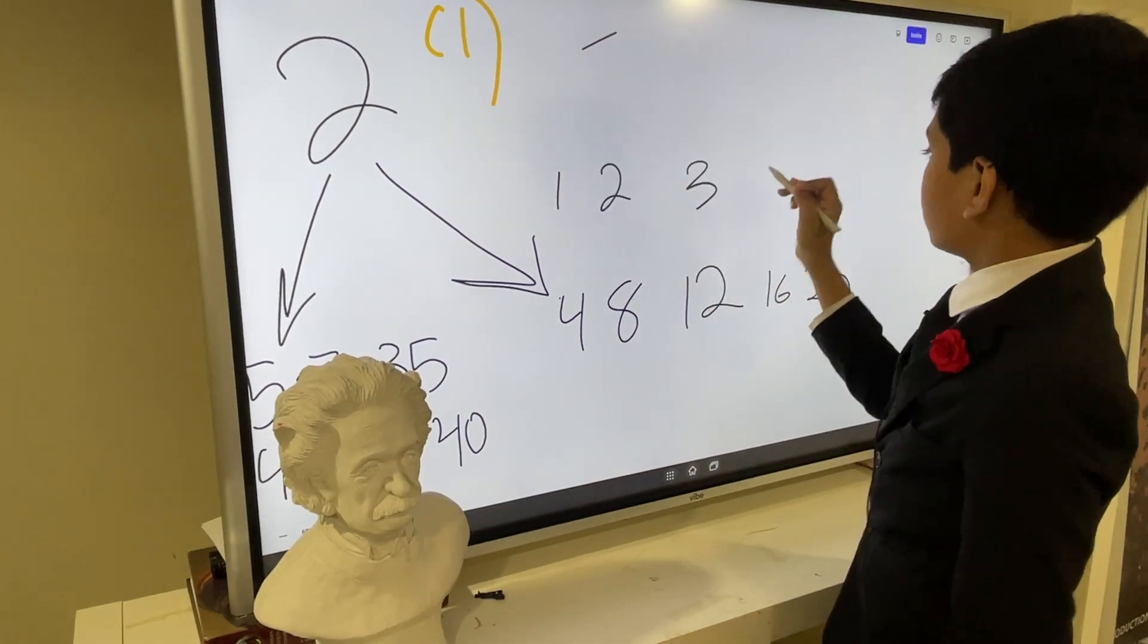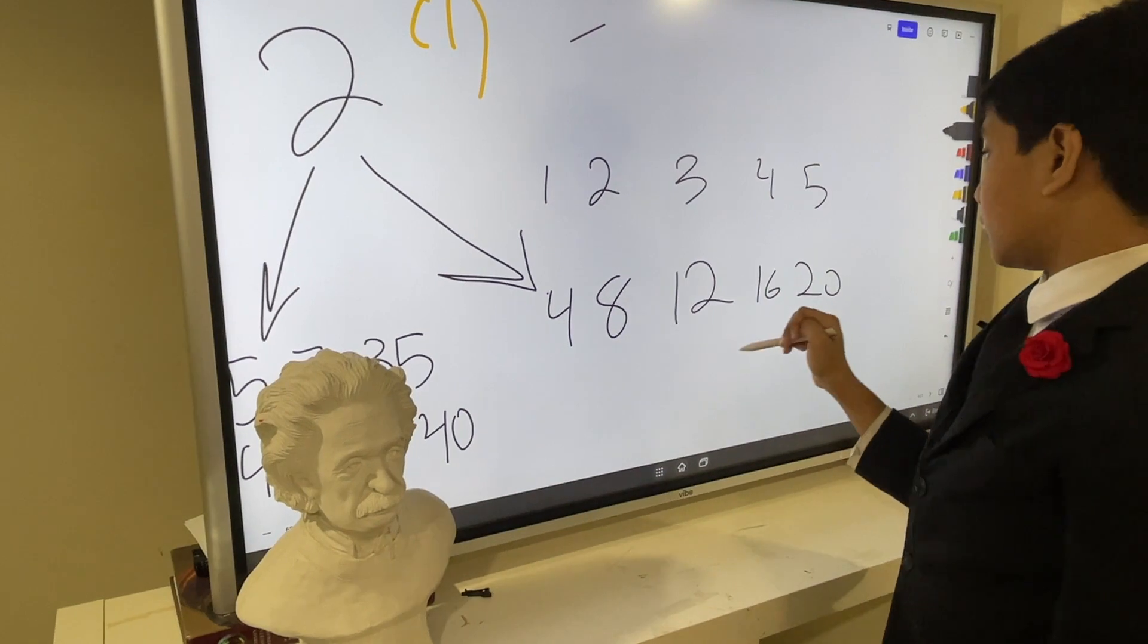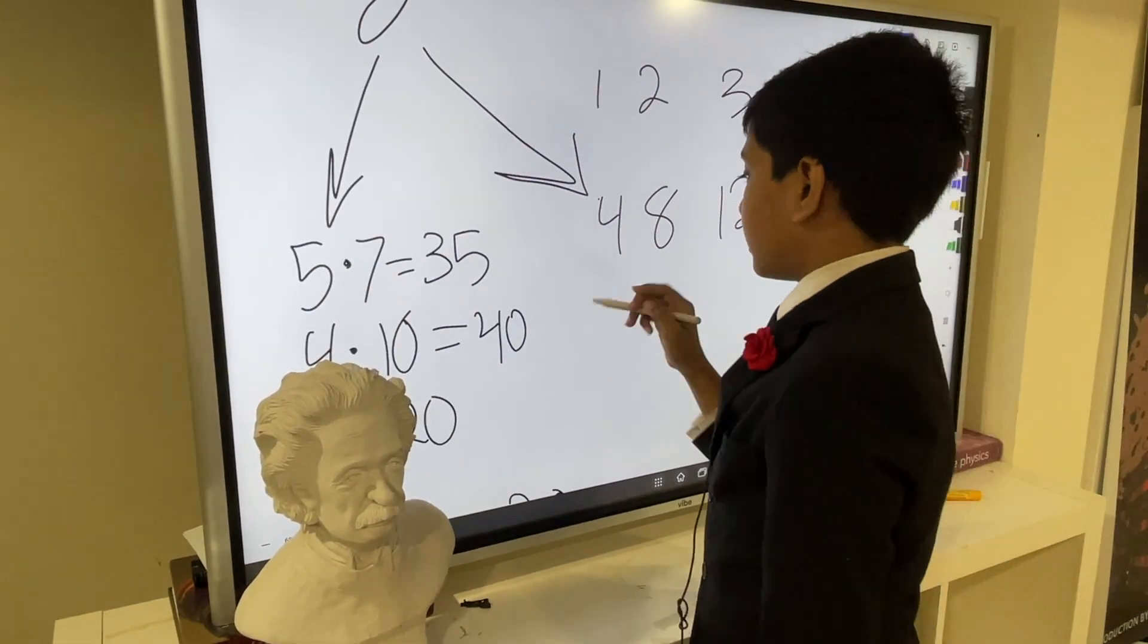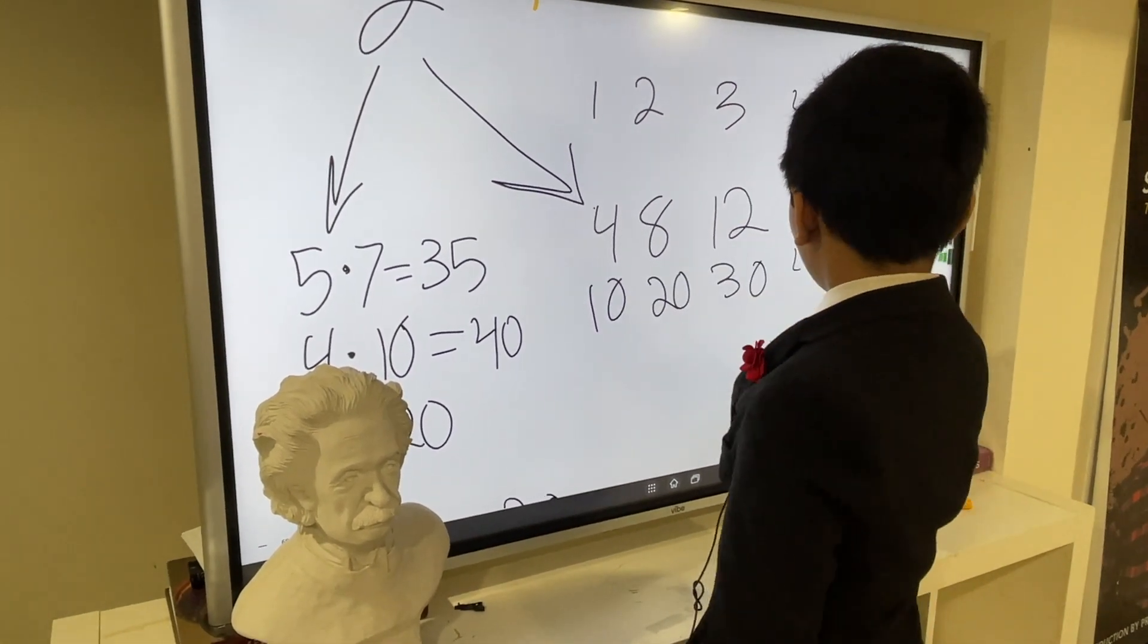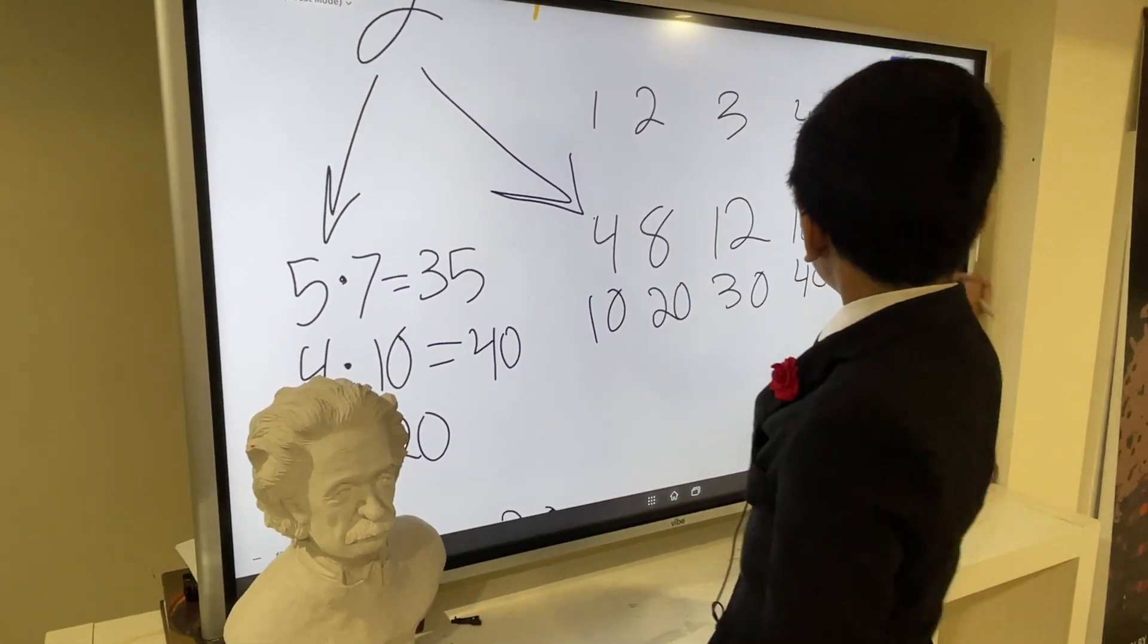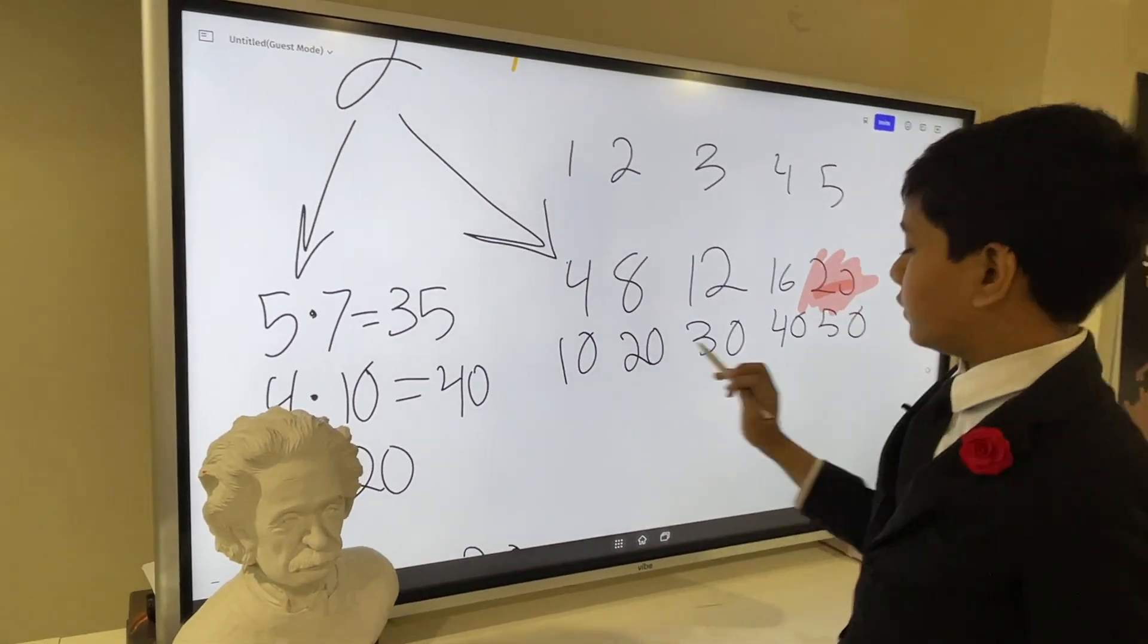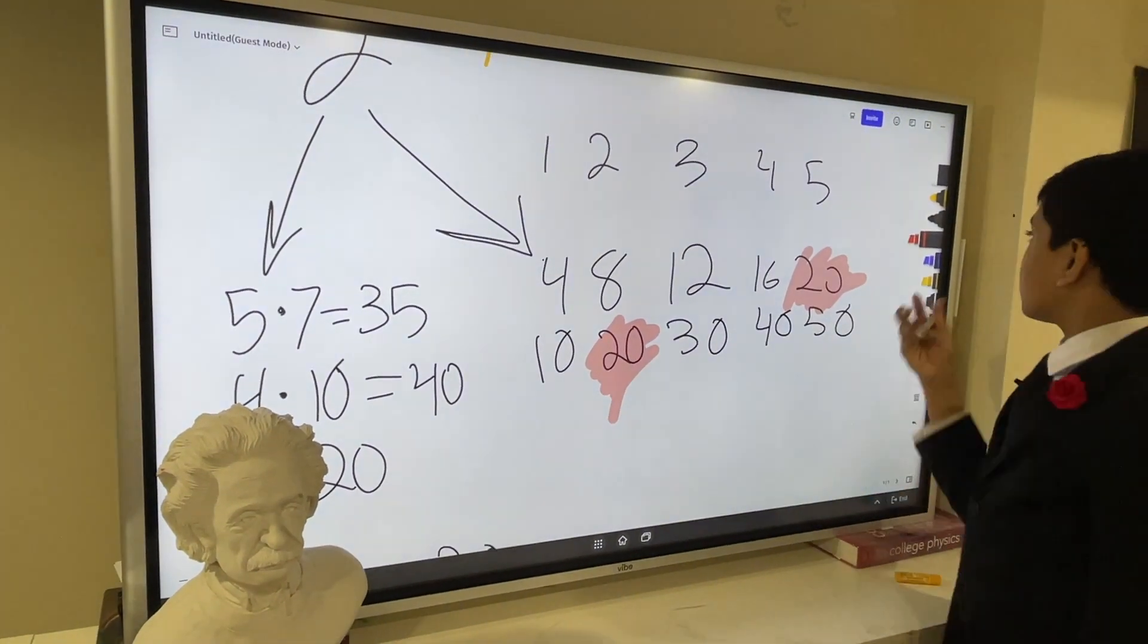The smallest multiple that they have in common. We can write little columns for this. This is one, this is two, this is three, this is four, this is five—meaning four times one, four times two, four times three, four times four, four times five. Then 10, 20, 30, 40, 50. Right away you can probably see we've got a match.